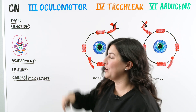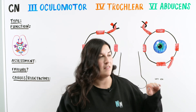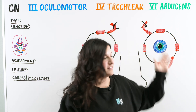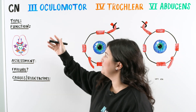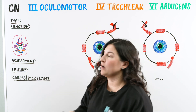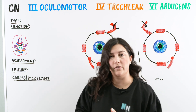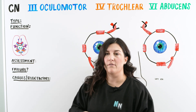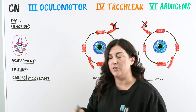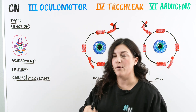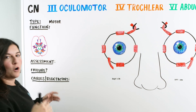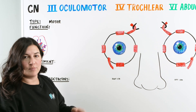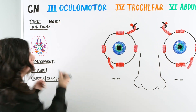We have our ocular motor, we have trochlear, and then we have abducens. When we go through the different types, we've been talking about are they sensory, are they motor, or are they both. For this in particular, all three of them are motor. And then the function for all of these is going to be eye movement.